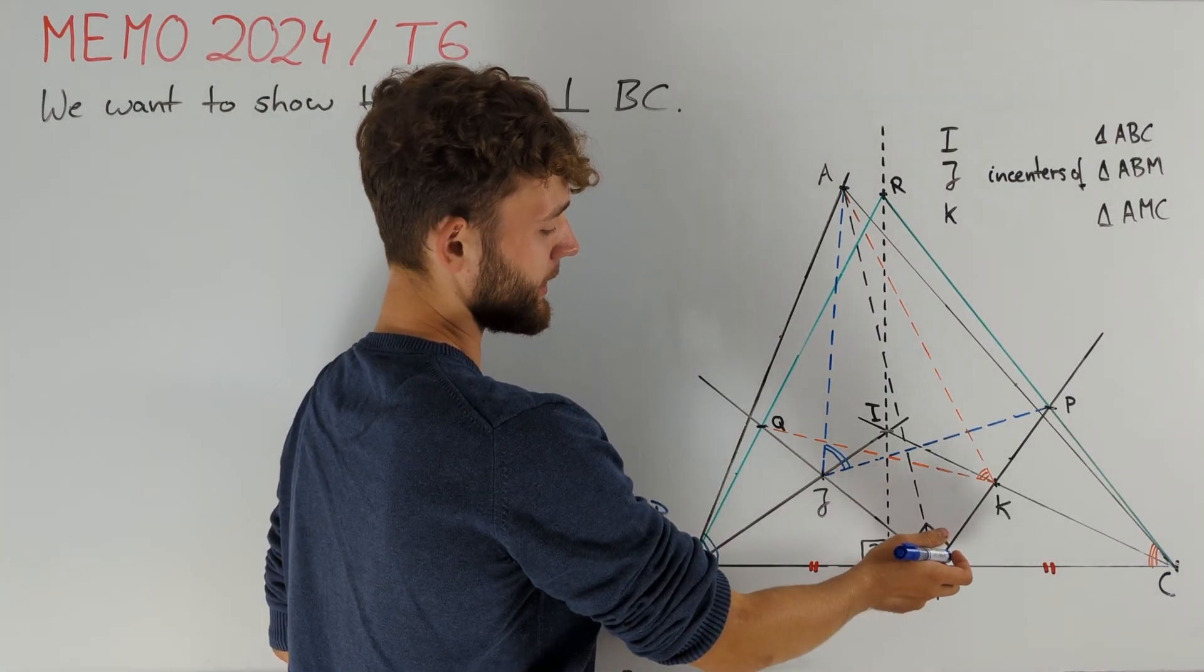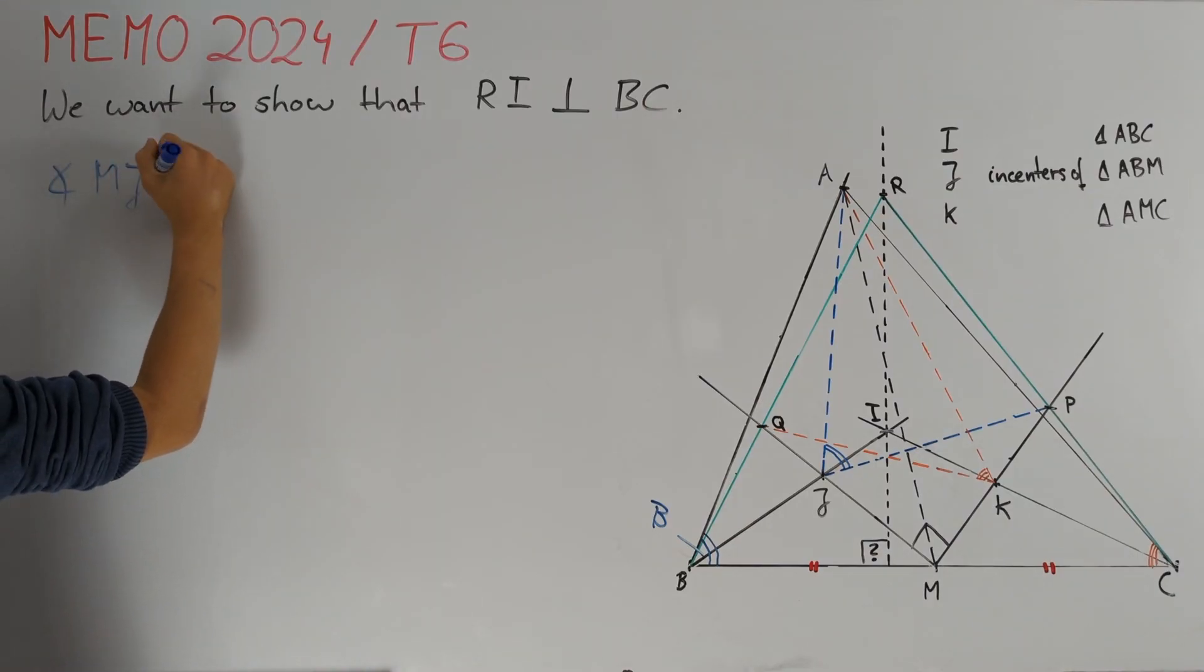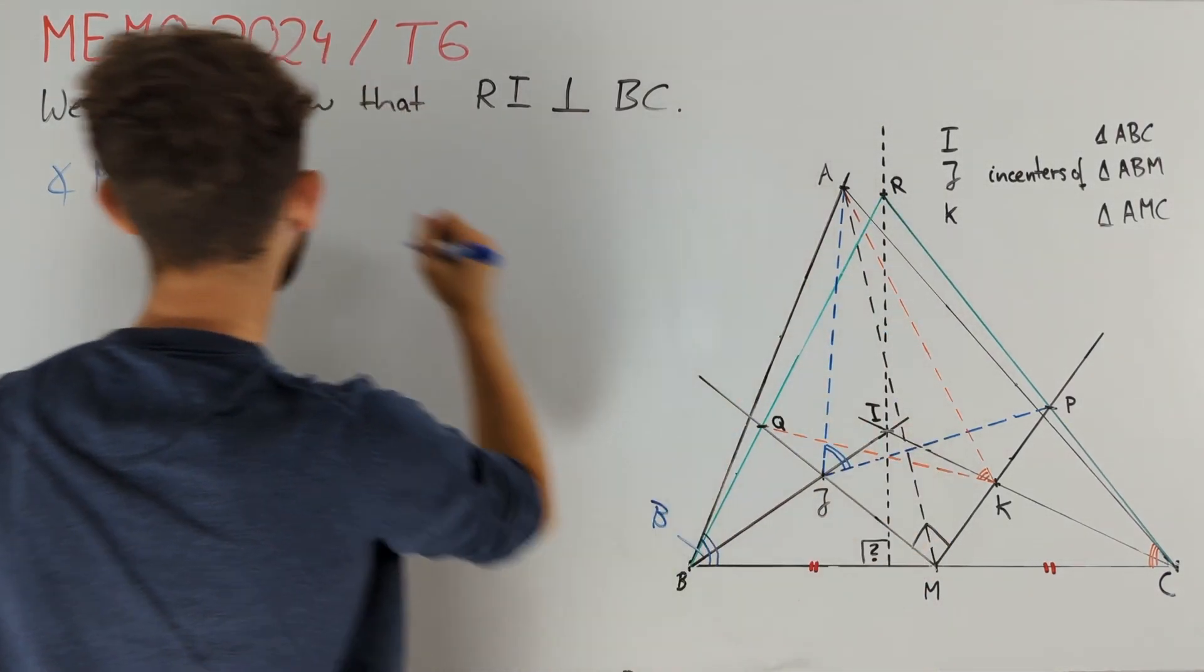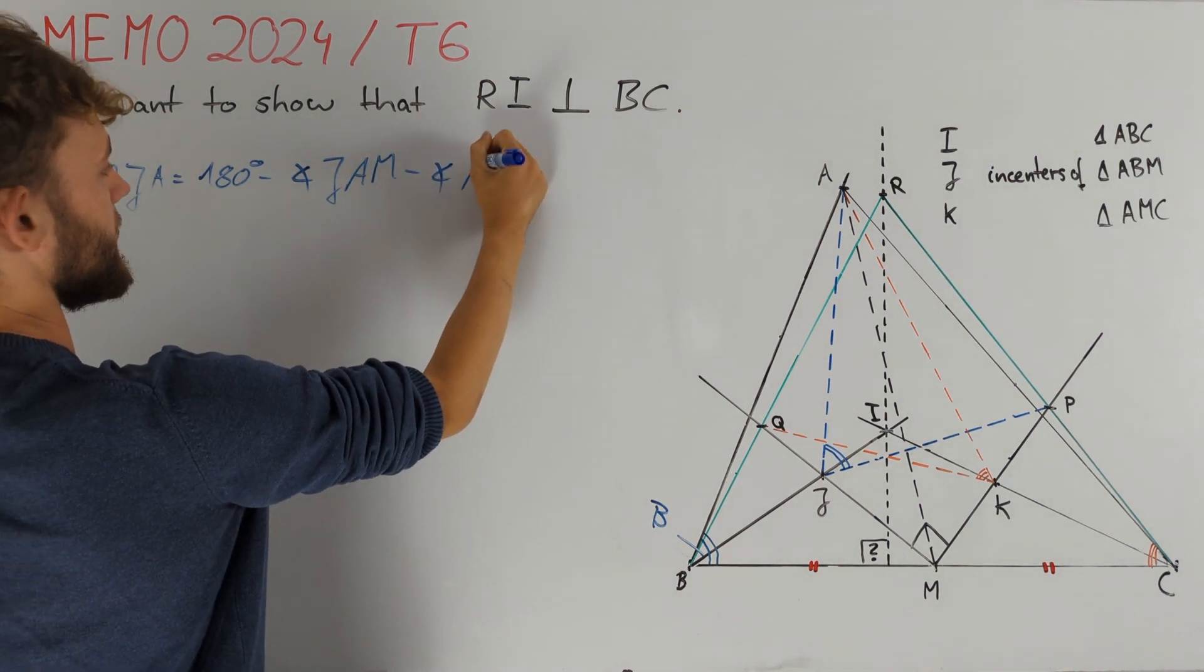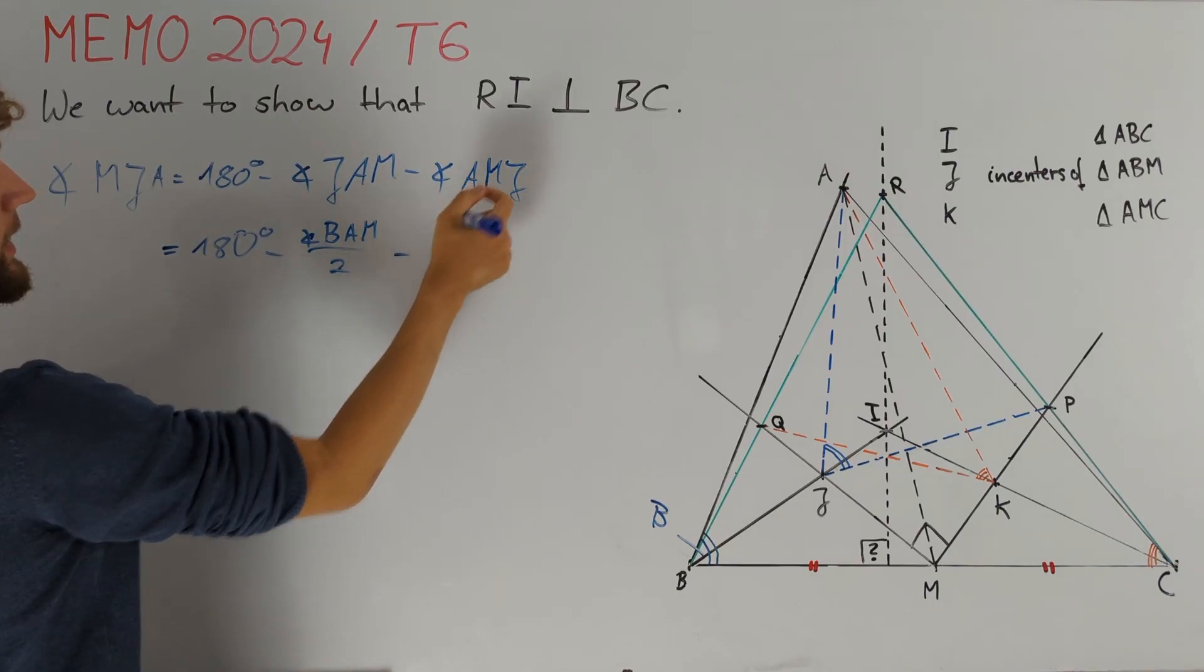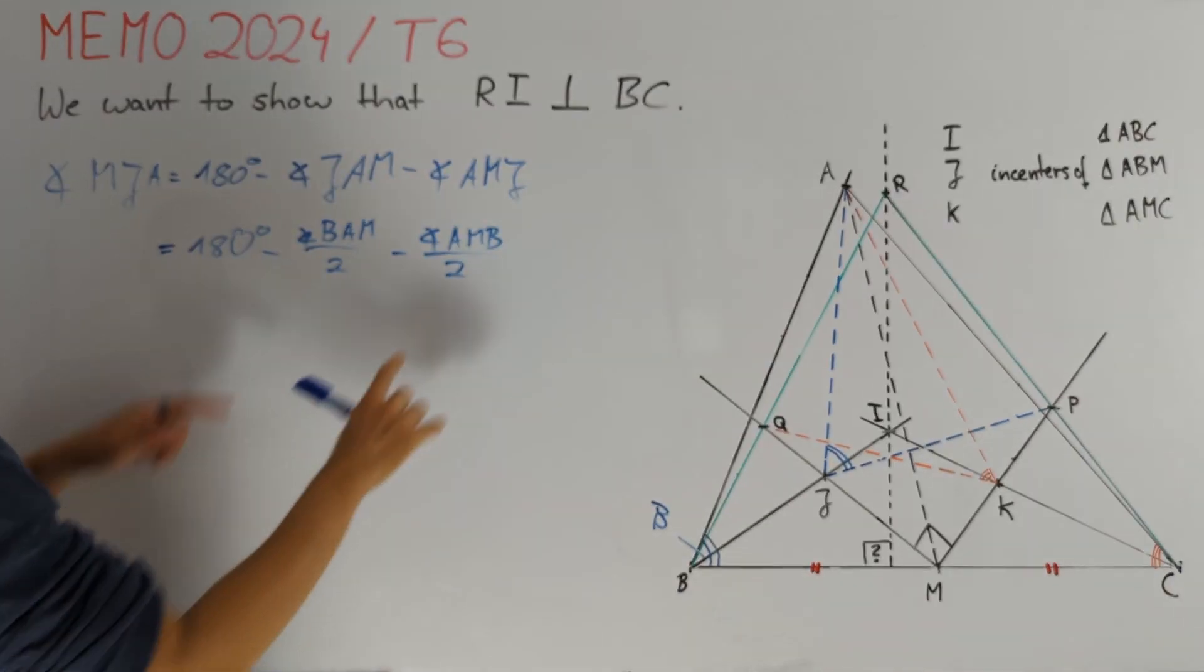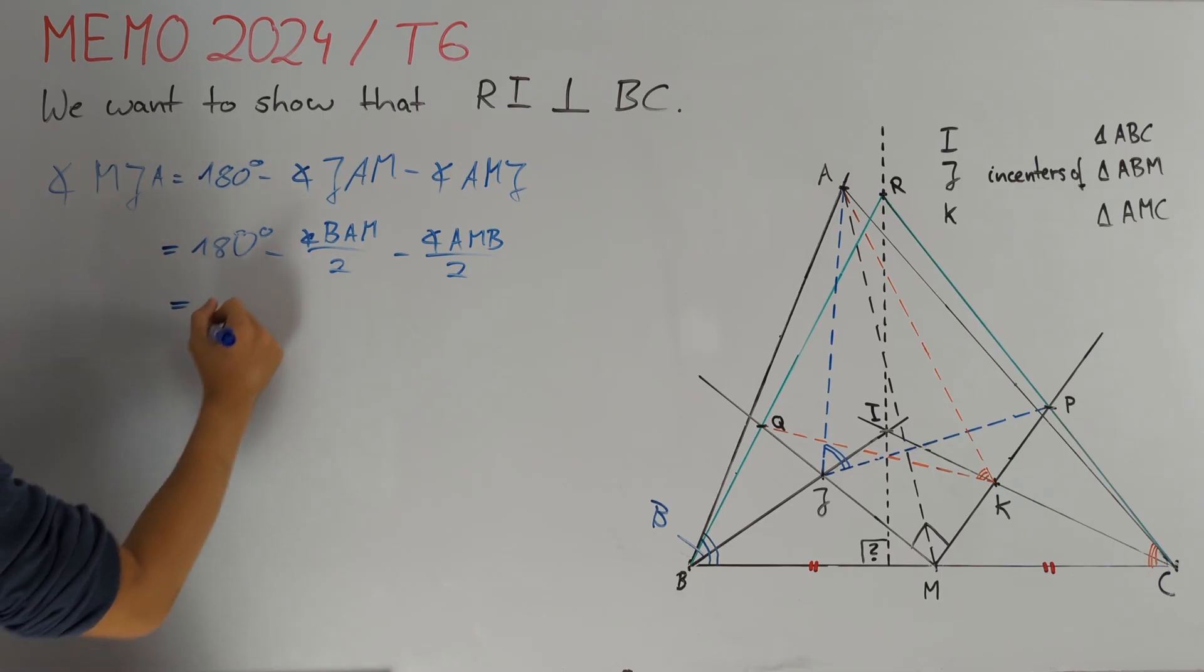In particular we can now get this angle MJA in the following way. MJA is equal to 180 degrees minus angles JAM and minus angle AMJ. Since angle JAM is just angle BAM over 2 and similarly AMJ is angle AMB over 2 and these two angles sum up to 180 degrees minus beta, we get in total that angle MJA equals 90 degrees plus beta over 2.